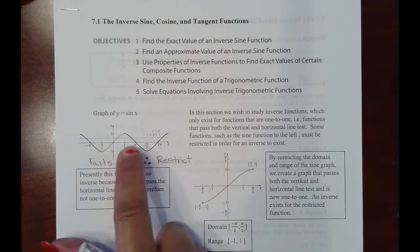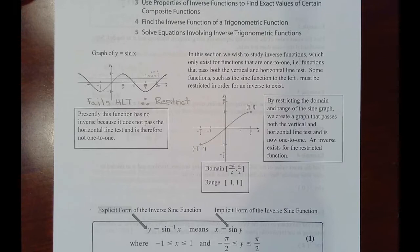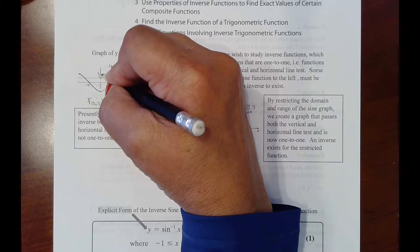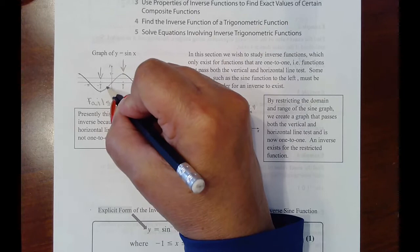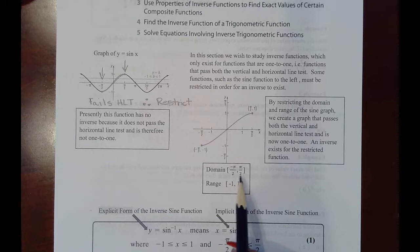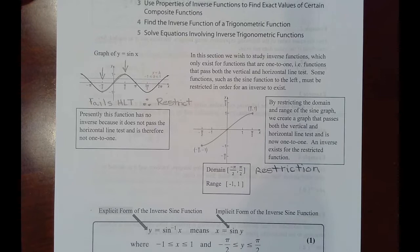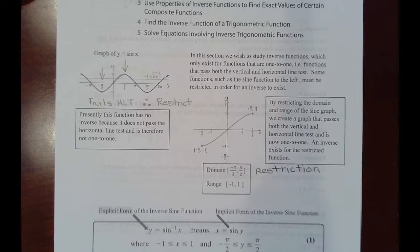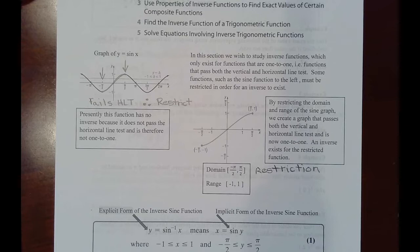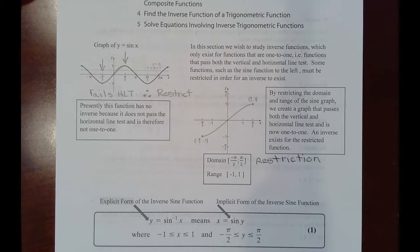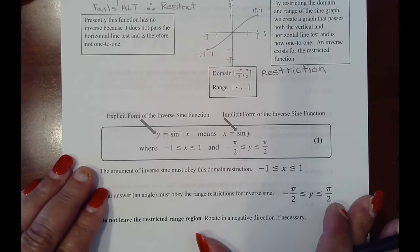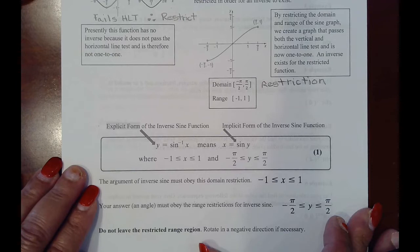Instead of treating the entire sine function, we will look at just a portion of it — specifically from negative pi over 2 to pi over 2. We clip out just that portion. By restricting to that portion of the graph, we now can find an inverse because it passes both the vertical line test and the horizontal line test. The main thing you'll need to do is memorize the restrictions for inverse sine, inverse cosine, and inverse tangent as though they were formulas.